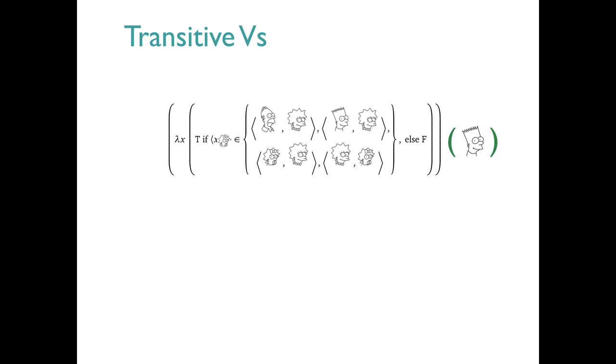To get to a claim about the world, we need to feed in a second argument. Here it's Bart. He comes in and knocks out the lambda X, and we substitute him for the variable X in the body of the expression. And now we're just checking whether this pair is a member of this larger set. It isn't, so the final value is false. In our little toy model, Bart admires Maggie is false.